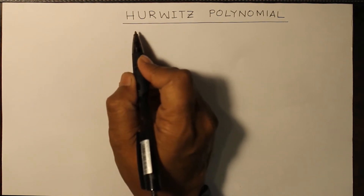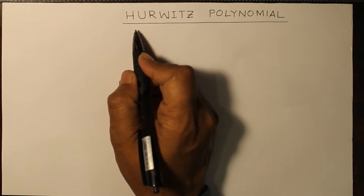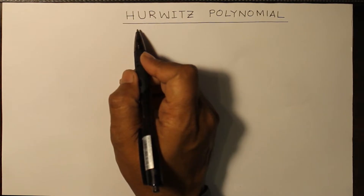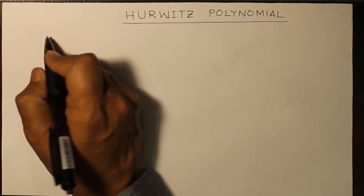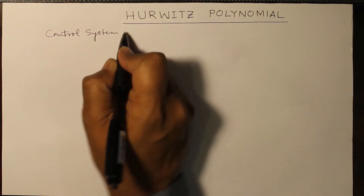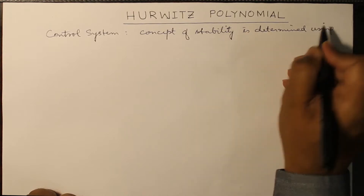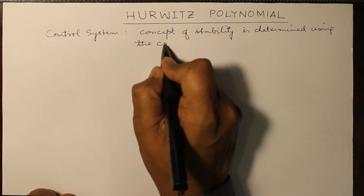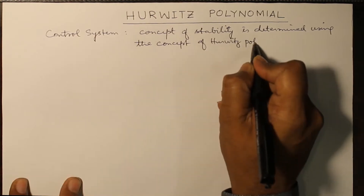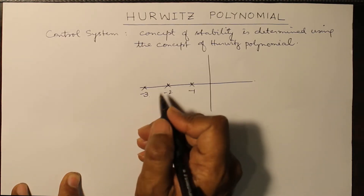Hurwitz polynomial is a topic that comes under network synthesis. The basic condition for a positive real function is that its denominator must be a Hurwitz polynomial. We need to study this because in control systems, which you will cover in later semesters, the concept of stability is determined using Hurwitz polynomials — specifically, a polynomial whose all roots lie on the left-hand side of the s-plane.